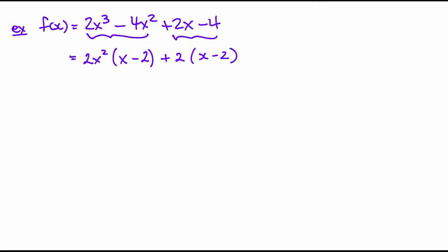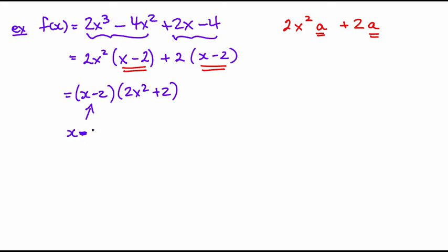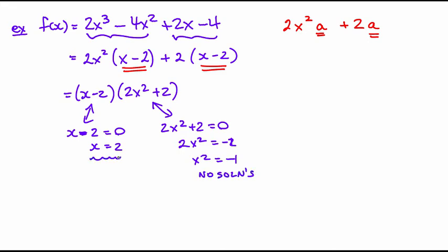This part here is common to both of these. Think about it like this: if you had 2x squared times a plus 2a, and this is the same as the x minus 2, you could factor that a out. So my next step is going to be x minus 2 times 2x squared plus 2. Then I try to make this part equal to 0. So x minus 2 is 0, which means x is 2. And I make this part equal to 0: 2x squared plus 2 is 0, which is 2x squared is equal to negative 2, or x squared is equal to negative 1. Two numbers multiplied can't give you a negative unless you deal with imaginaries. So this has no extra solutions. The only x-intercept to this is 2.